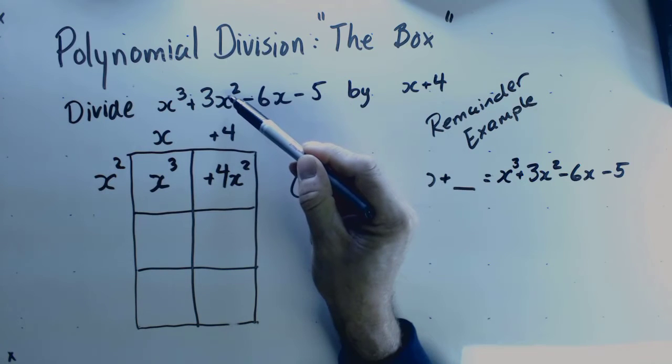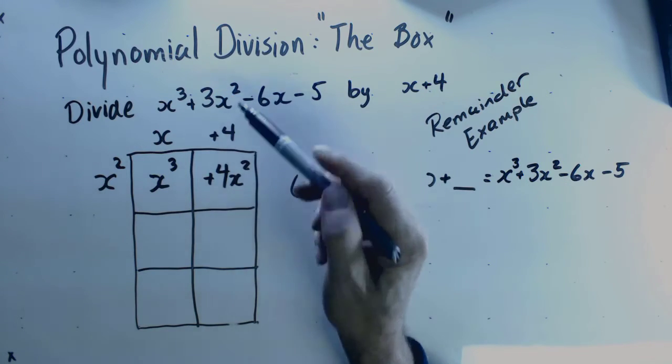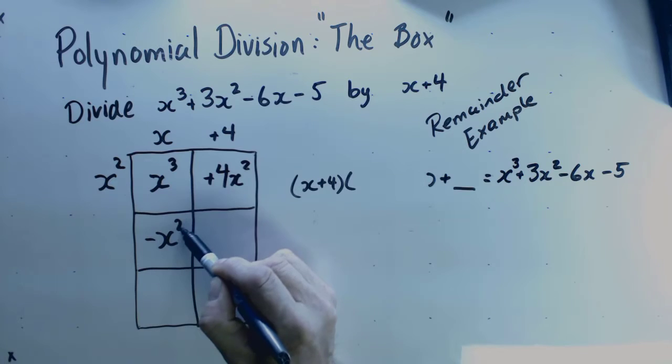I have 4x². I need 3x². That means I must have -x² here.